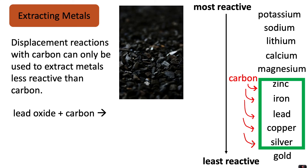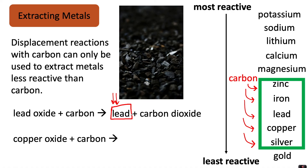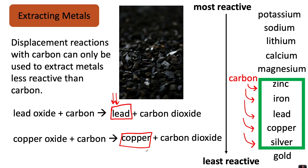For example, lead oxide plus carbon would make lead plus carbon dioxide, so the lead has been displaced and will be left in shiny chunks to collect at the end of the reaction. Copper oxide plus carbon would make copper and carbon dioxide. Copper is a really useful metal and we're running out of it because we use it a lot for pipes and wiring, so there aren't many good ores left containing lots of copper — we really must be recycling the copper we use.